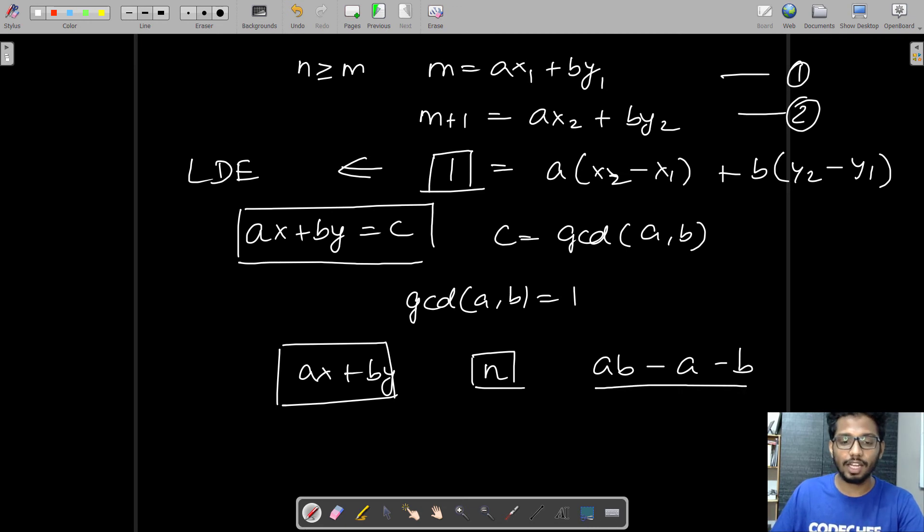We are looking for the smallest value greater than or equal to which all values can be represented in this form. If ab - a - b is the largest value that cannot be represented, then adding 1 gives us the smallest value greater than or equal to which all integers will be of the form ax + by.